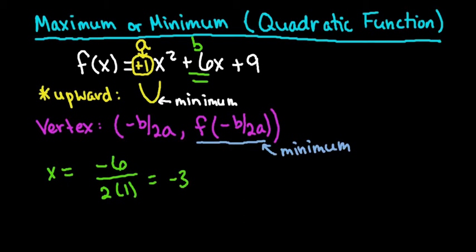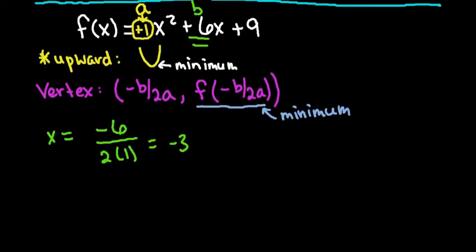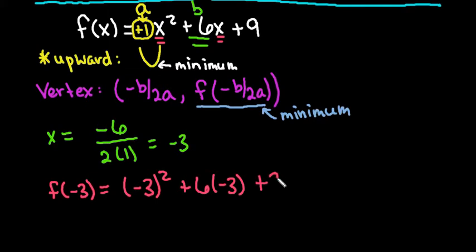Now to find the actual minimum point, we are going to plug in negative 3 into our equation. So that tells us to replace all of our x's with negative 3. So we would have negative 3 squared plus 6 times negative 3 plus 9.